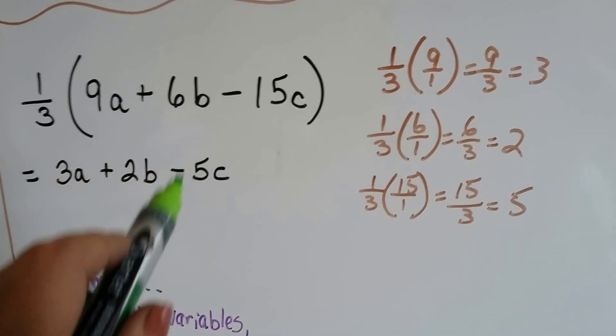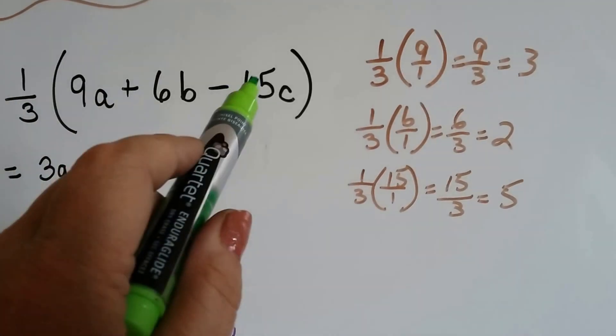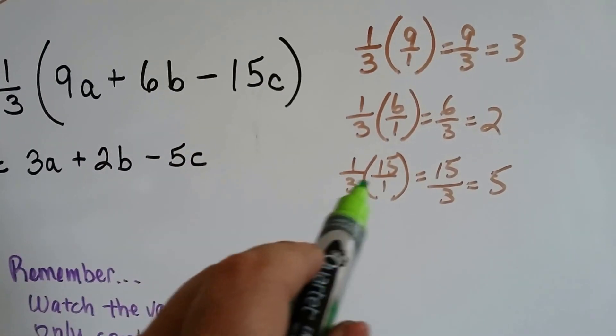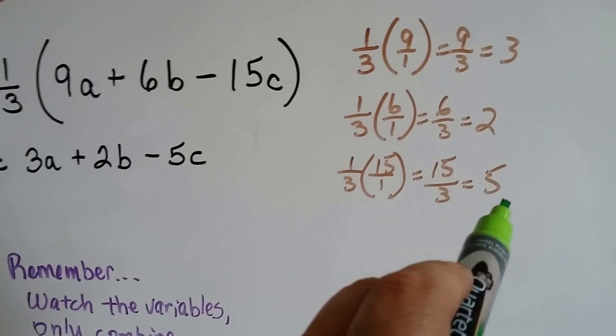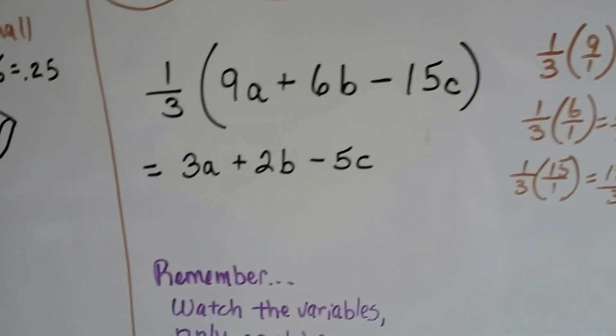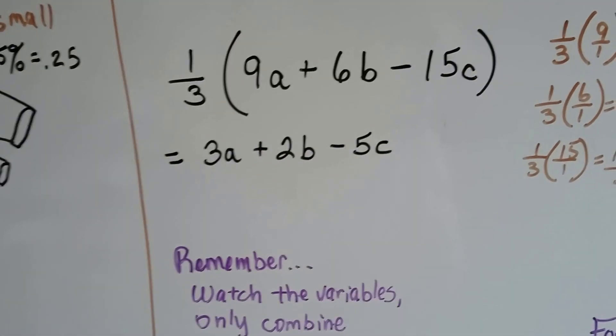And then we make sure we have our subtraction sign there. It's not all addition. There's a subtraction sign there. 1/3 times 15C. That's 1/3 times 15 over 1 which is 15 over 3 or 5. So that's 5C. And that's as simplified as it can get.